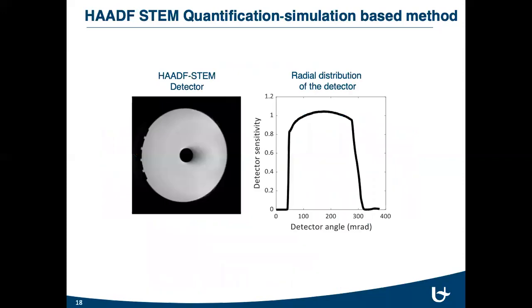Moreover, in reality, the detector surface is not homogeneous, which can also be seen in the radial distribution graph here. Therefore, to make the multi-slice simulations realistic and to increase the accuracy, the non-homogeneous experimental detector surface is also taken into consideration.